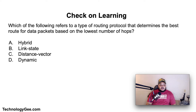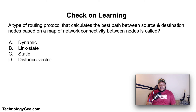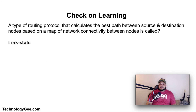Let's get to some check-on-learning questions. The first question is: which of the following refers to a type of routing protocol that determines the best route for data packets based on the lowest number of hops — is it hybrid, link state, distance vector, or dynamic? The correct answer is distance vector. The second question: a type of routing protocol that calculates the best path between source and destination nodes based on a map of network connectivity is called what — is it dynamic, link state, static, or distance vector? The correct answer is link state routing protocol.